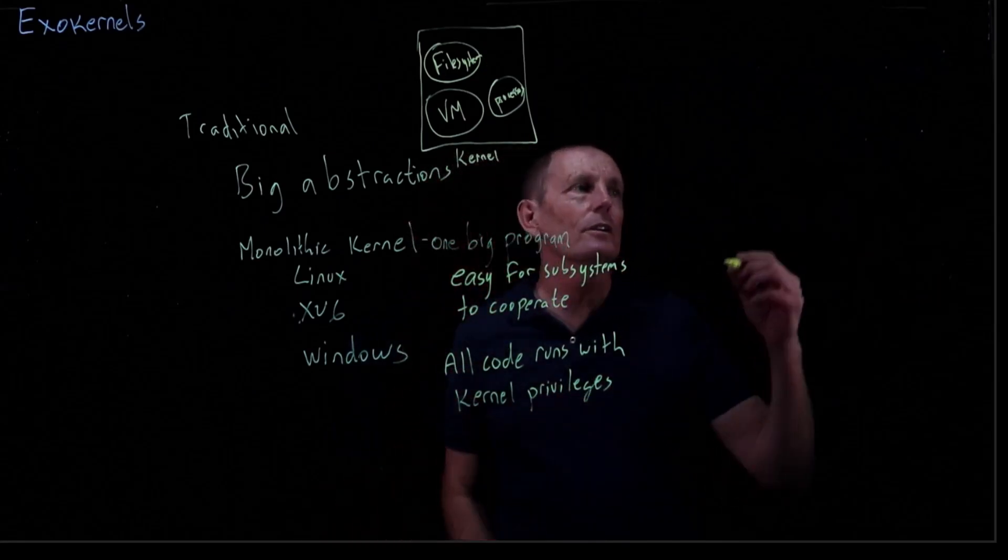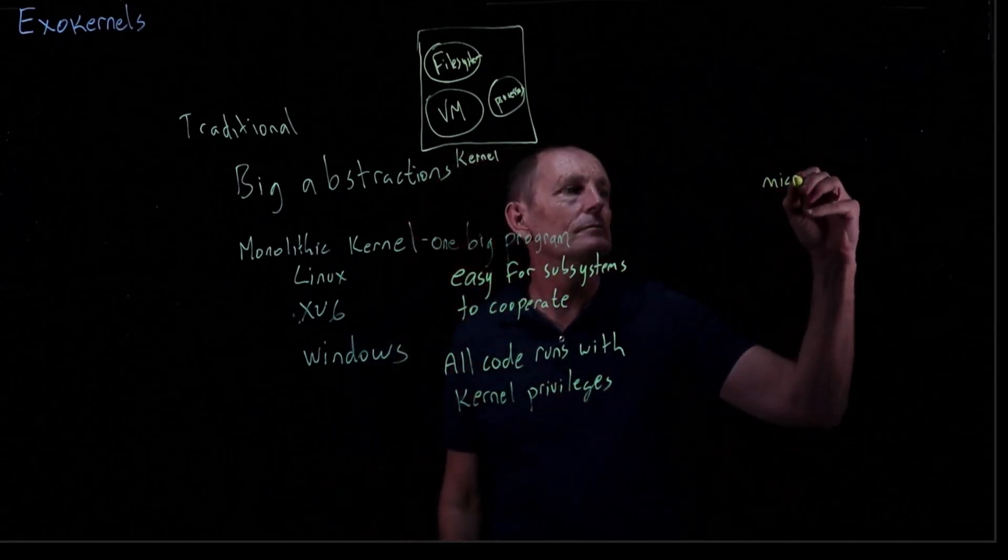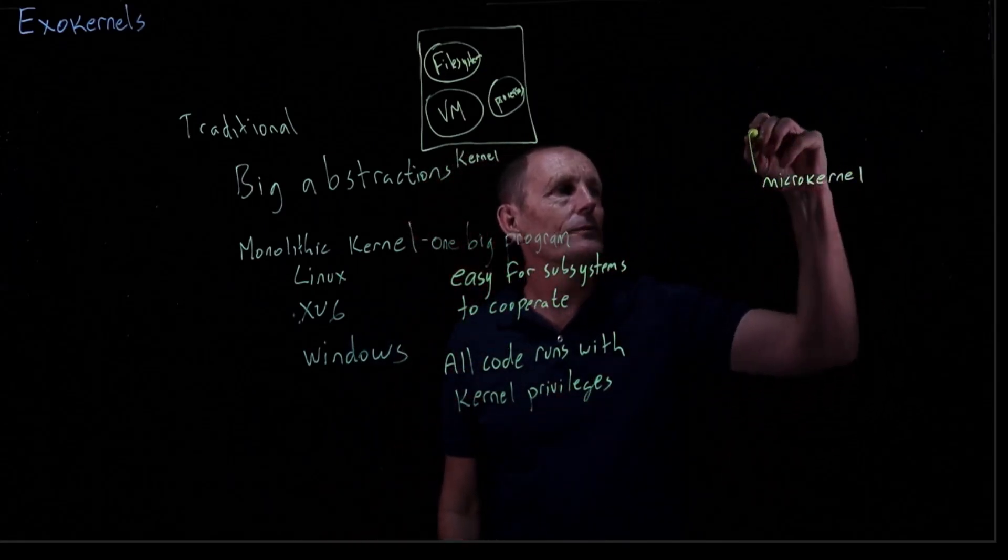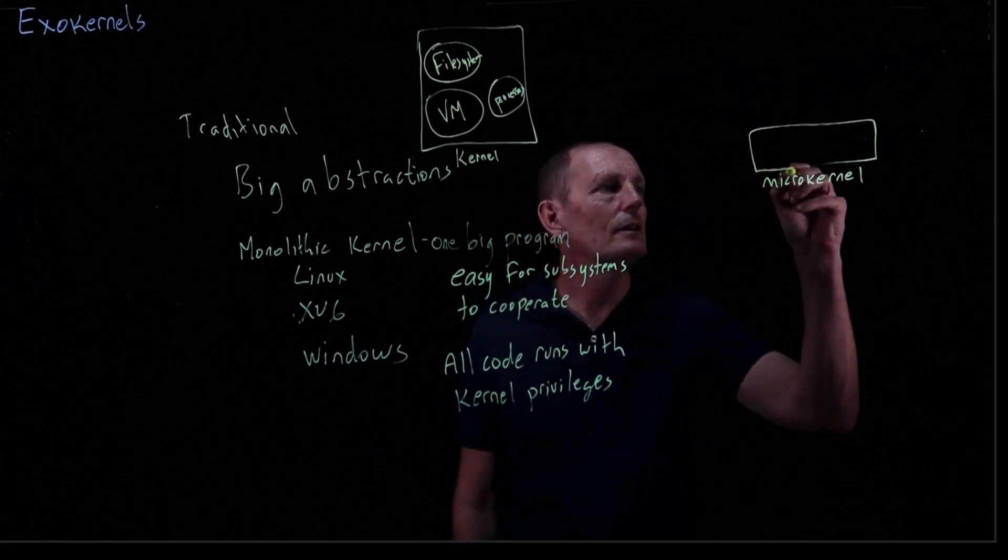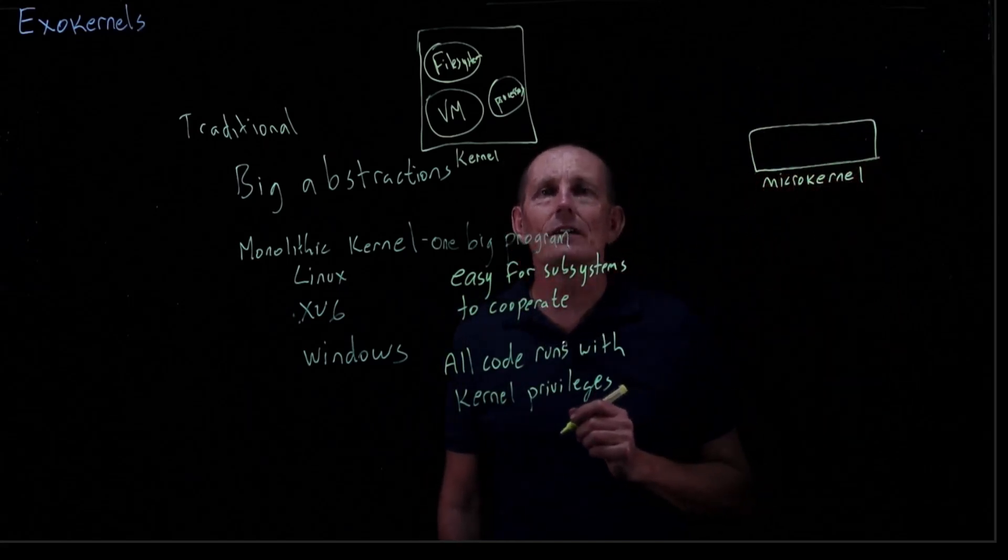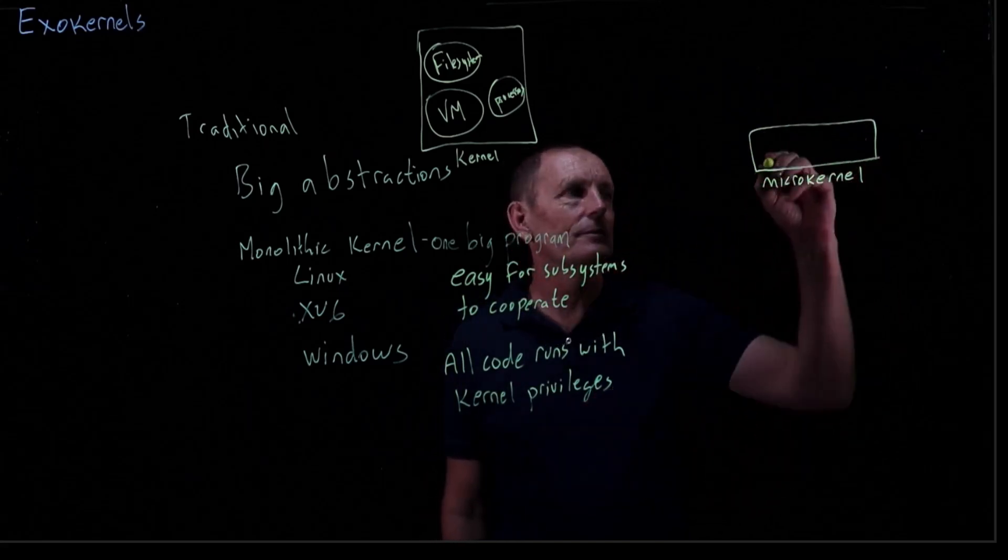An alternative to the monolithic kernel would be the microkernel. So the microkernel is much smaller. And what it mostly consists of is interprocess communication.